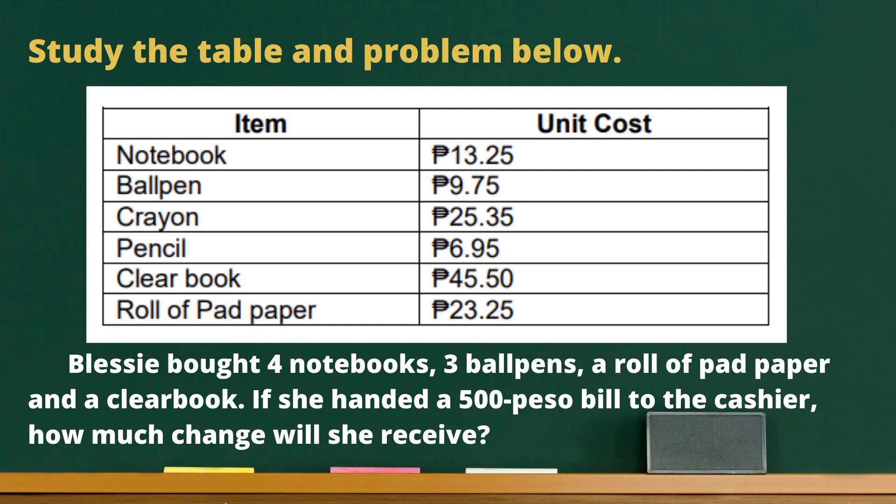Let us try another example. Study the table and problem below. Blessie bought four notebooks, three ballpens, a roll of pad paper, and a clear book. If she handed a five-hundred-peso bill to the cashier, how much change will she receive? A notebook costs thirteen pesos and twenty-five centavos. One ballpen costs nine pesos and seventy-five centavos. A roll of pad paper costs twenty-three pesos and twenty-five centavos. A clear book costs forty-five pesos and fifty centavos.